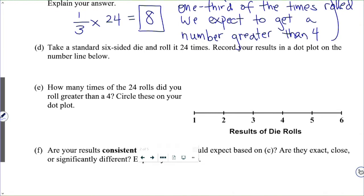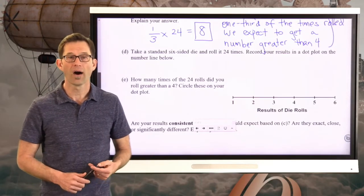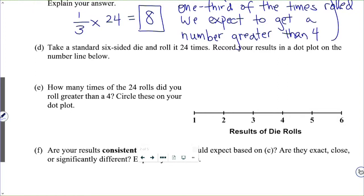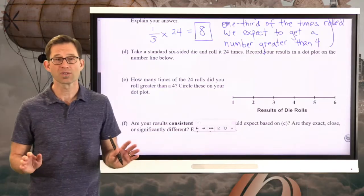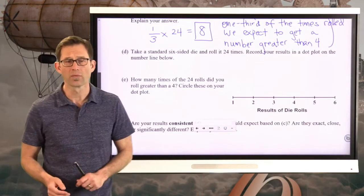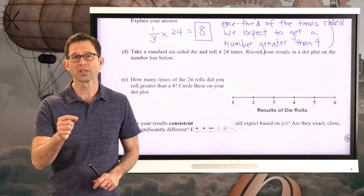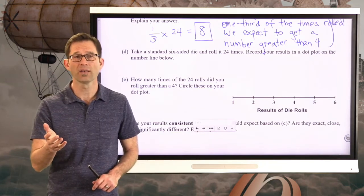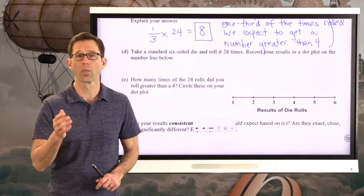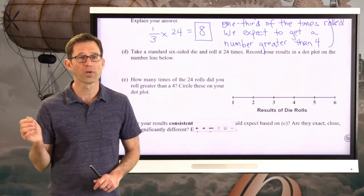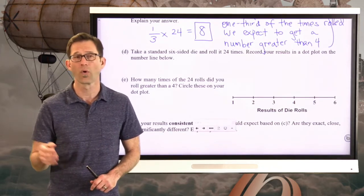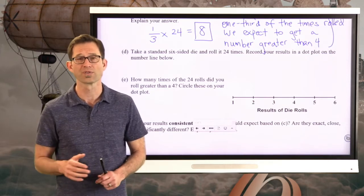And it's a real easy experiment. Letter D: Take a standard six-sided die and roll it 24 times. Record your results in a dot plot on the number line below. So you're going to do that. And then in letter E, how many times of the 24 rolls did you roll a number greater than 4? Circle these on your dot plot. So this is going to actually take you a little bit. I would suggest turning off or pausing the video now, taking that six-sided die, and just roll it 24 times.